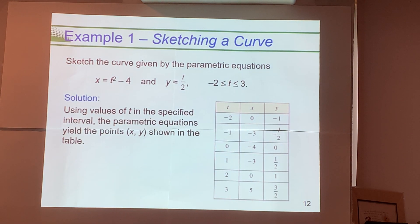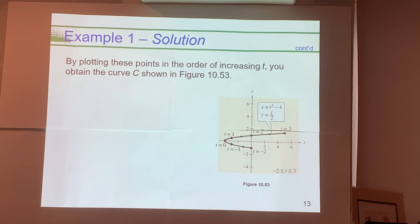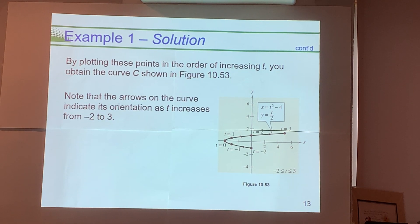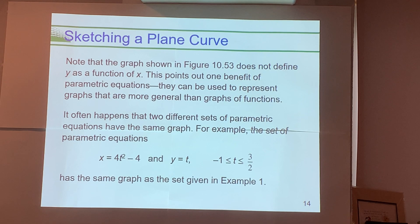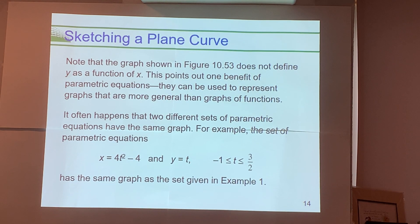The textbook made a table of parameter values and found corresponding x and y ordered pairs, just like we did. They sketched the plane curve and noted the arrows indicate the orientation. The particle would start at (0, −1) and move along the curve to (5, 3/2). They then note that parametric equations are not unique in representing the same rectangular curve.